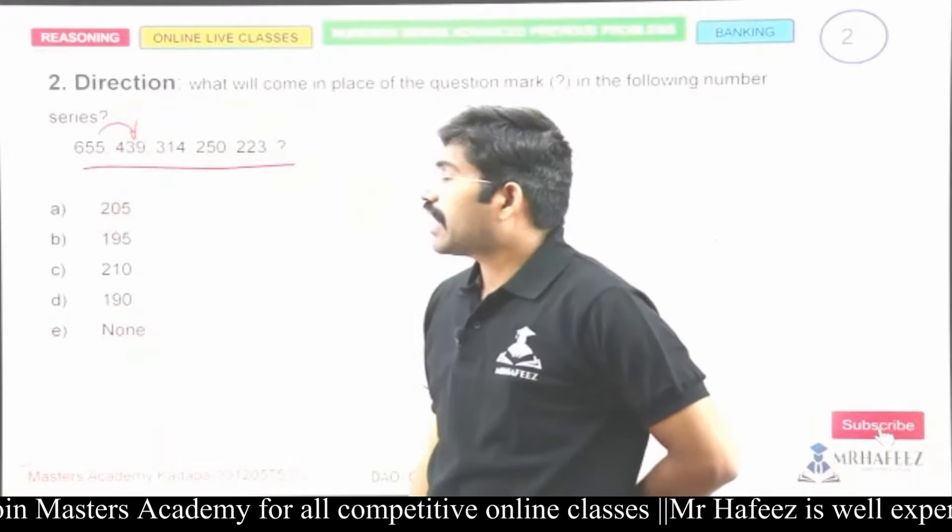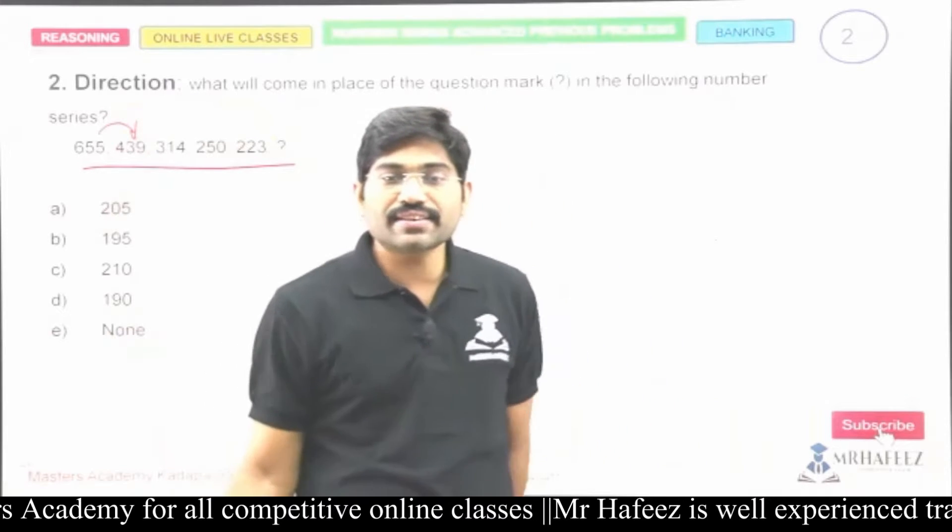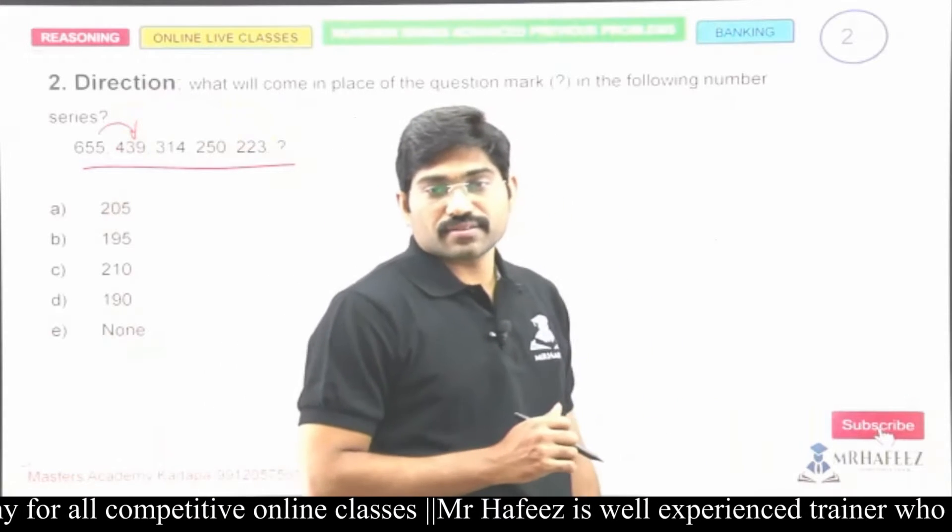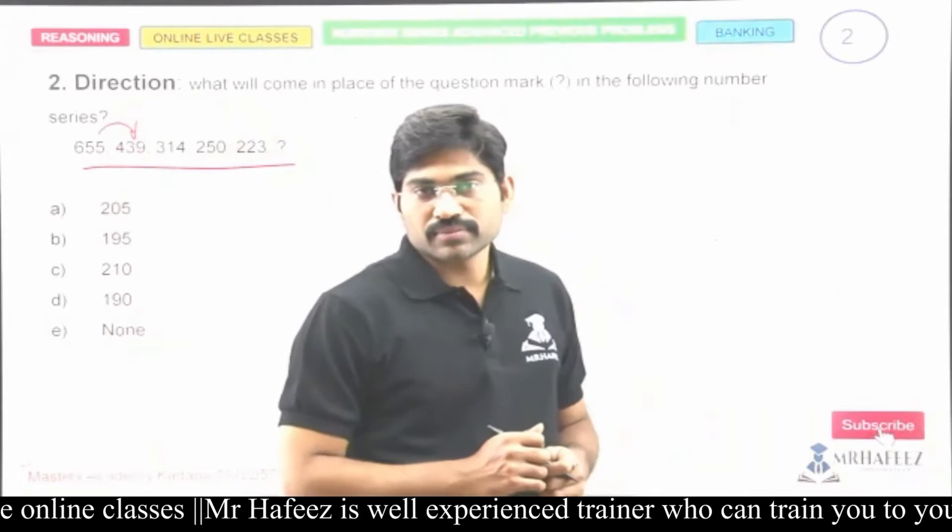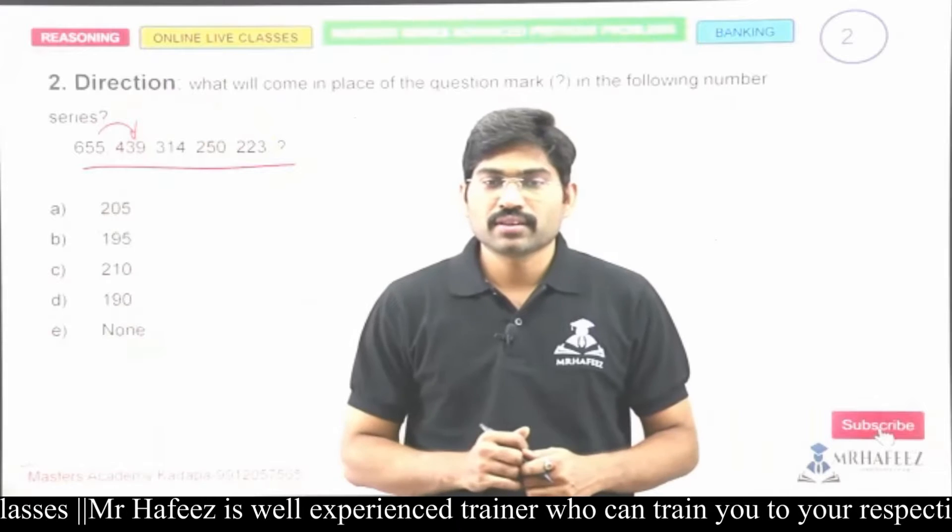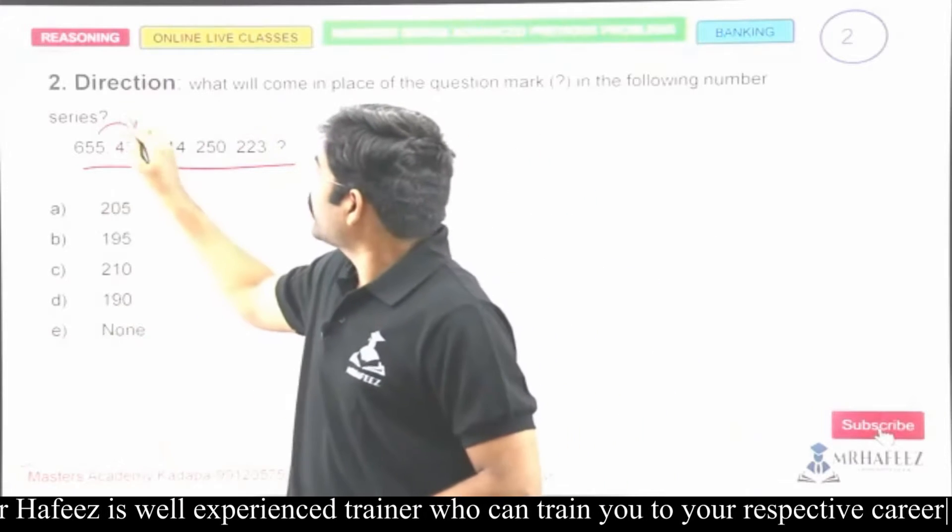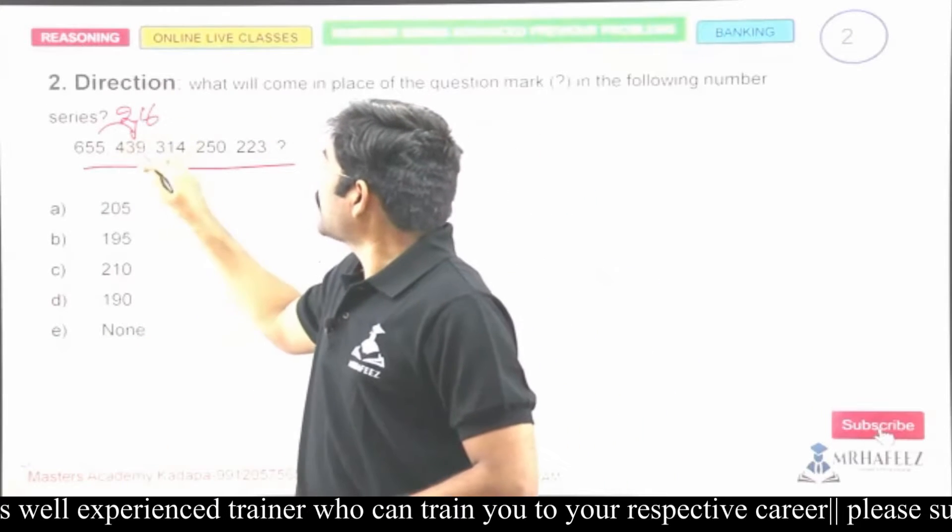Six hundred fifty-five and four thirty-nine. What is the difference? Come on, type your answer. Two one six, okay, two one six.